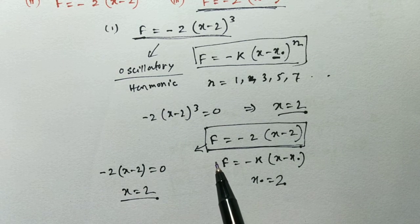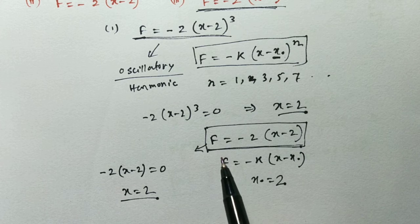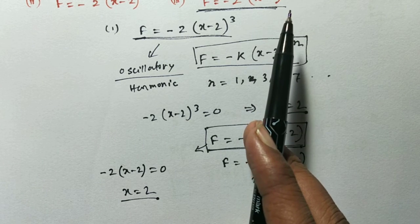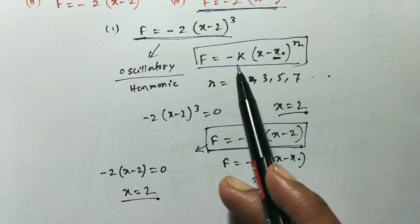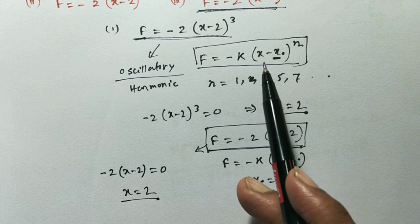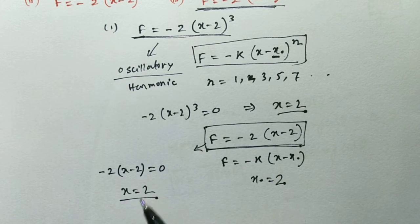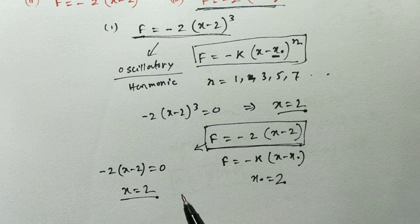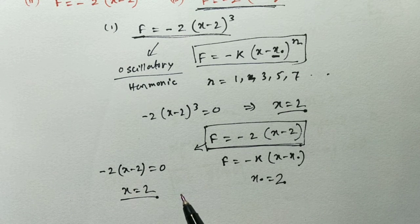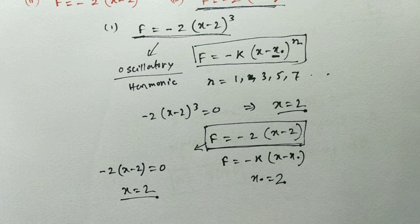In this way we can describe the motion of any particle if the force is given — either by comparing the equation with the general equation, or by equating the force to zero. In any way, we can determine whether the motion is simple harmonic or harmonic, and also find the point about which the motion executes. Thank you.